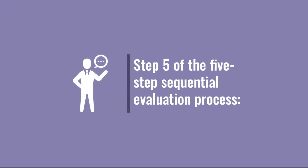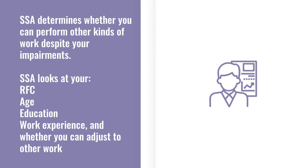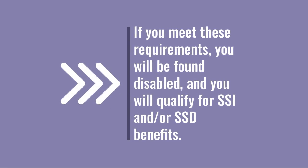Finally, let's discuss step 5 of the five-step sequential evaluation process. At this step, the SSA needs to prove that despite your impairments, you are capable of performing other types of work and therefore do not need benefits. The SSA will look to your RFC, age, education, and work experience to see if you can make an adjustment to other work. If the SSA decides you can make an adjustment to other work, you will not be considered disabled. The SSA considers it more difficult for you to adjust to other work if you are over 50 years old. If you complete all five steps of this process, you will be found disabled and will qualify for SSI and/or SSD benefits.